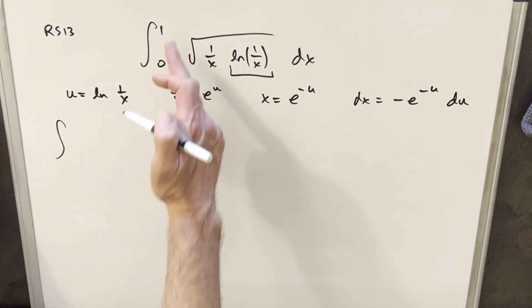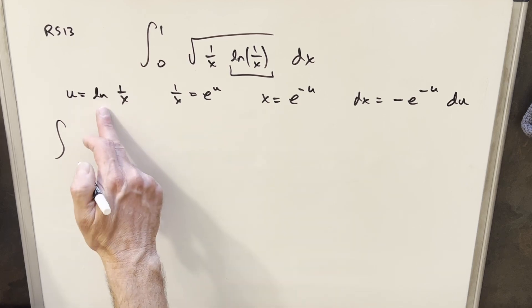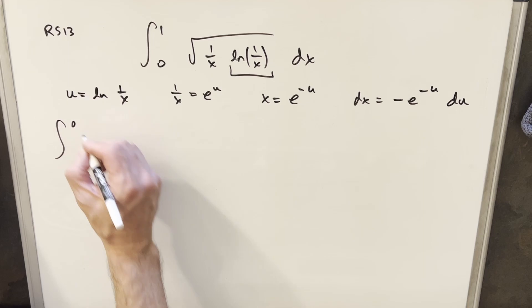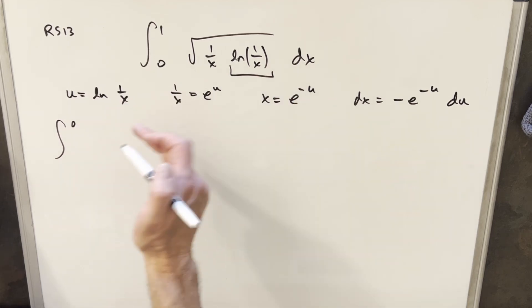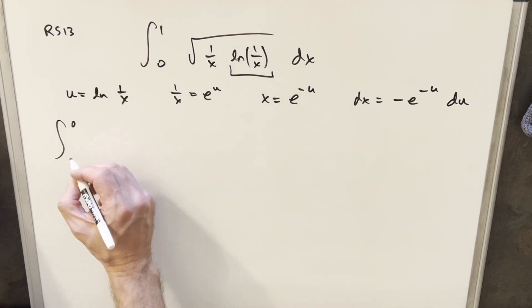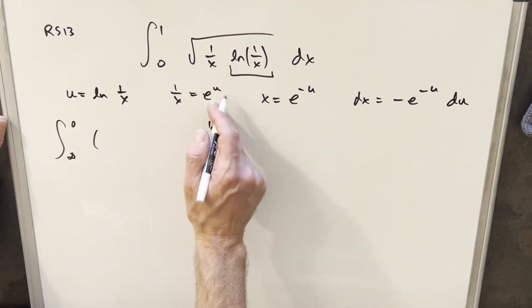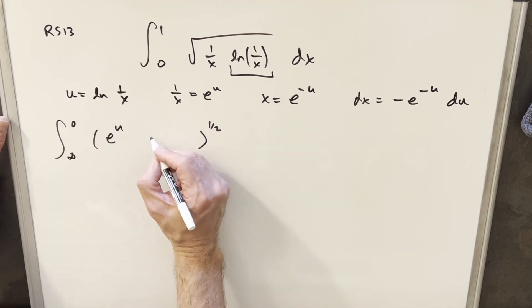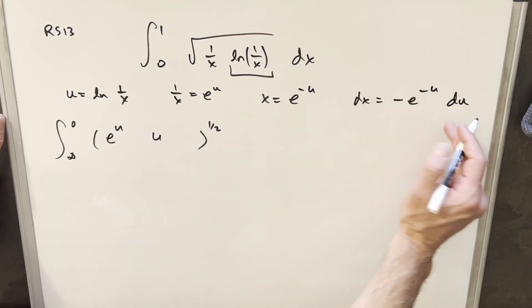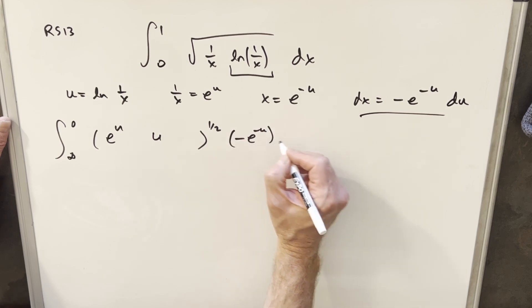First I'll plug a 1 in here. 1 over 1 is 1, natural log of 1 is just 0. Then I'll plug a 0 in here. 1 over 0 is heading towards infinity, natural log of infinity is heading towards infinity. For the square root here, I'm going to write this as 1 half power. The value for 1 over x is e to the u, and for natural log 1 over x we have just u. For our dx value, it's just minus e minus u du.